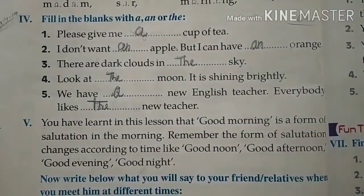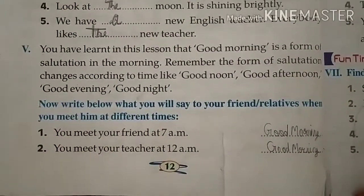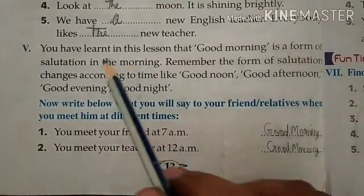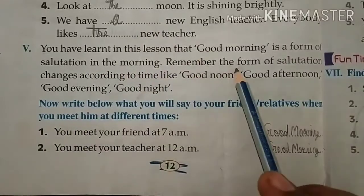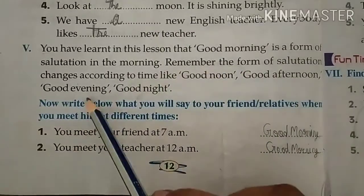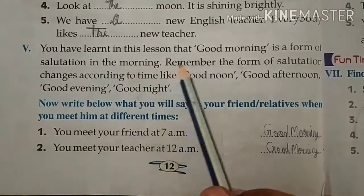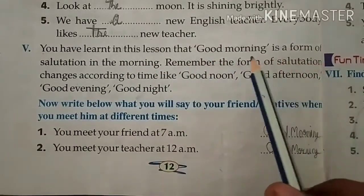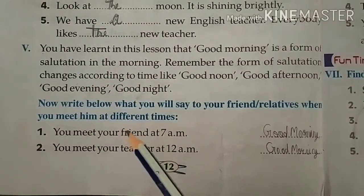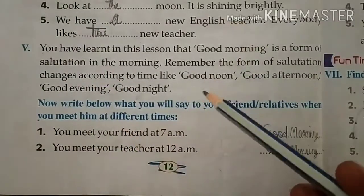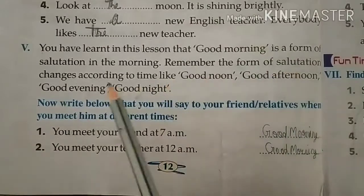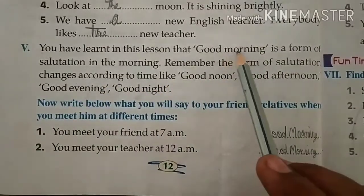यह आपकी activity थी। Next activity देखिए: You have learned in this lesson that Good Morning is a form of salutation in the morning। Remember, the form of salutation changes according to the time। इस chapter में आप पढ़ चुके हैं कि Good Morning क्या होता है — form of salutation। Salutation यानि अभिवादन — किसी को सामने जाते हैं तो उसका सम्मान करने, अभिवादन करने का तरीका।